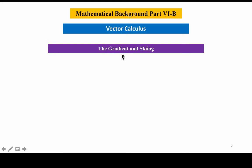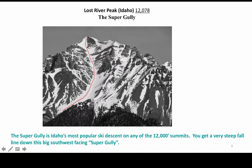We studied the gradient here, and I'd like to relate it to skiing, which I think you'll see the connections are pretty obvious. Here's a mountain in Idaho called the Lost River Peak.